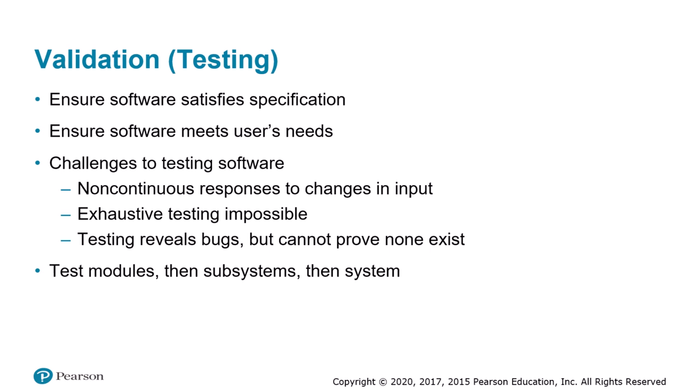Software testers strive to put together suites of test cases that exercise all the capabilities of the component or system being validated. To reduce complexity, testing is usually performed in stages. In the first stage, each individual module is tested independently, since it is easier to isolate and fix errors when the number of lines of code is relatively small. After each module is debugged, modules are combined into larger subsystems for testing. Eventually all subsystems are combined into the complete system. When a bug is fixed in a particular module, all related test cases should be repeated to confirm the fix did not accidentally introduce another bug.